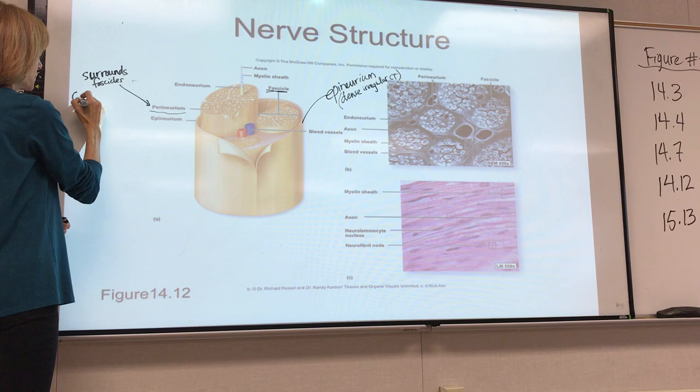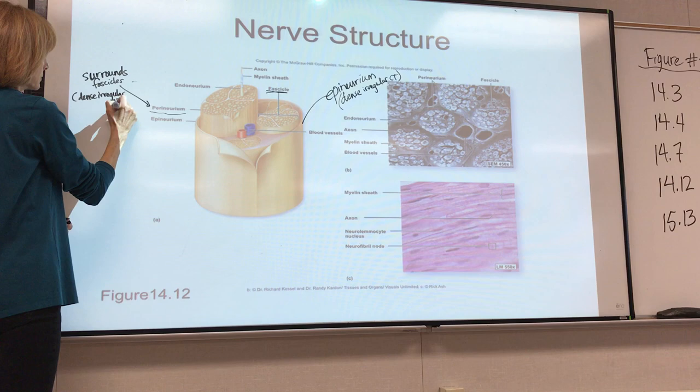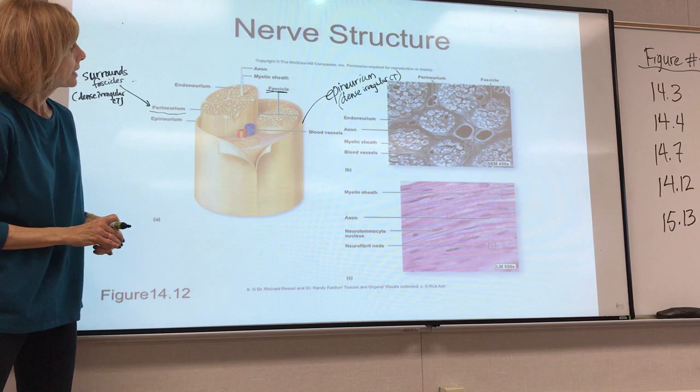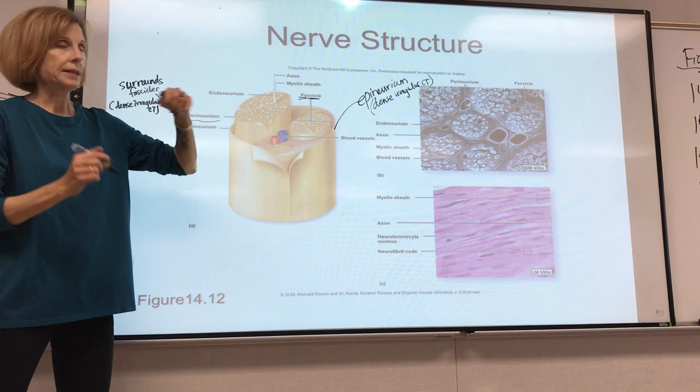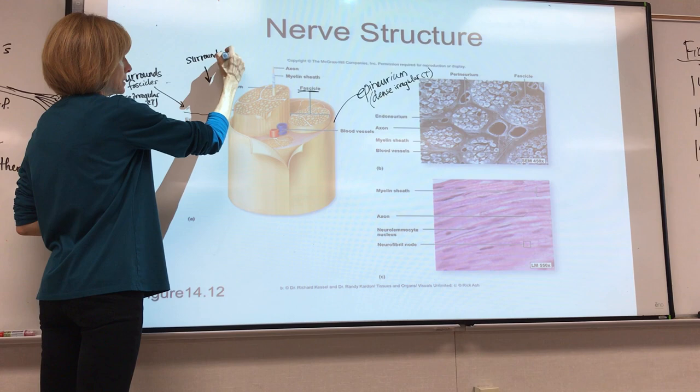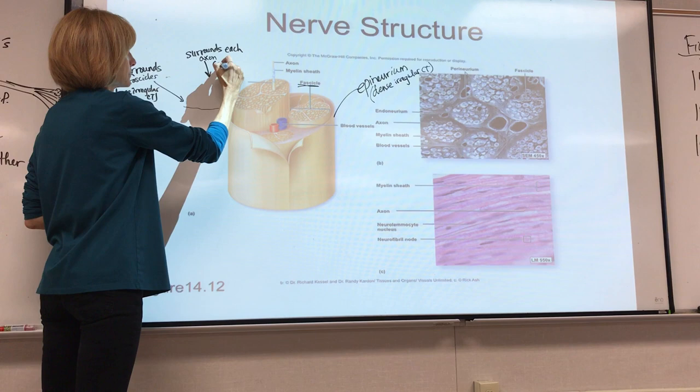The perineurium is also dense irregular. And then finally, there is the endoneurium — the layer of connective tissue that surrounds each individual axon. This would be areolar tissue, a little more delicate, just like endomysium.